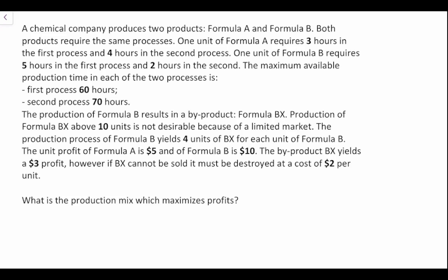Both require the same processes. One unit of Formula A requires three hours in the first process and four hours in the second process, and one unit of Formula B requires five hours in the first process and two hours in the second process. The maximum available production time is: the first process is 60 hours, the second process is 70 hours.